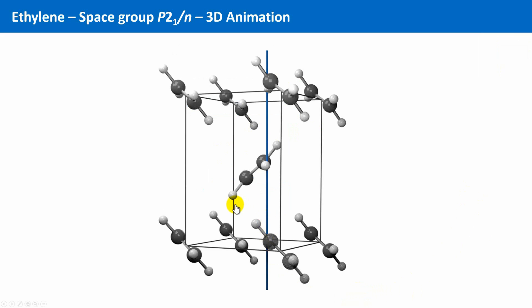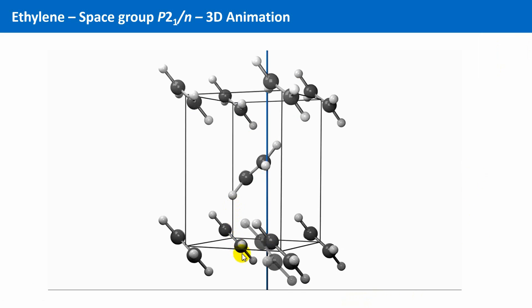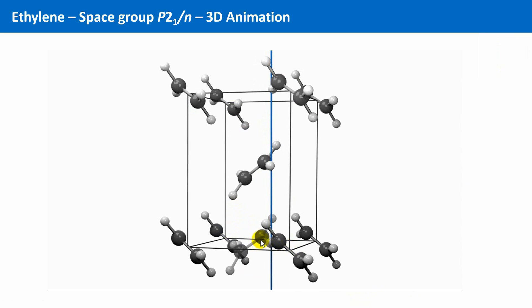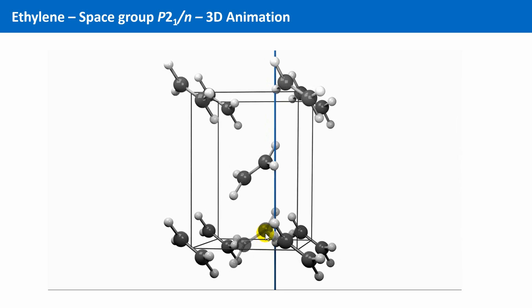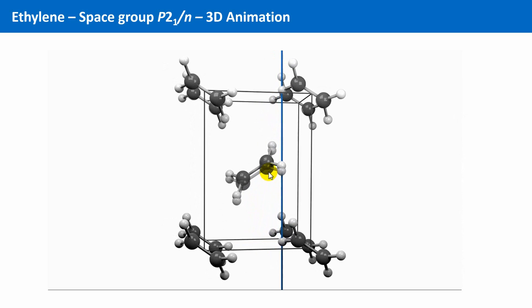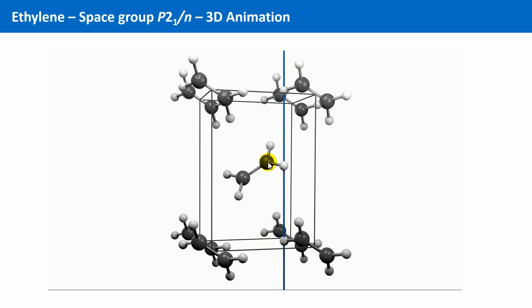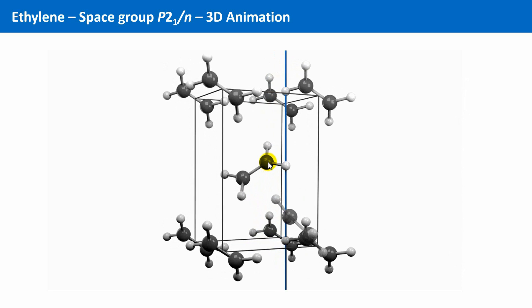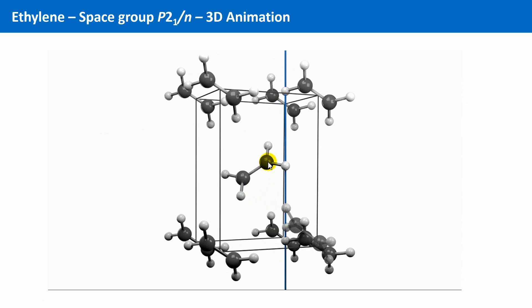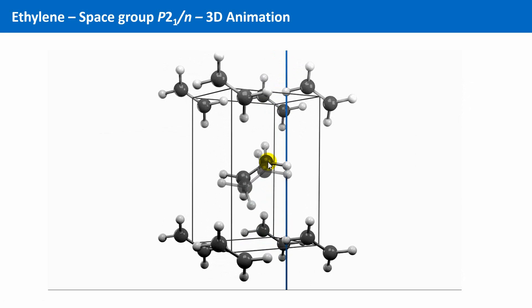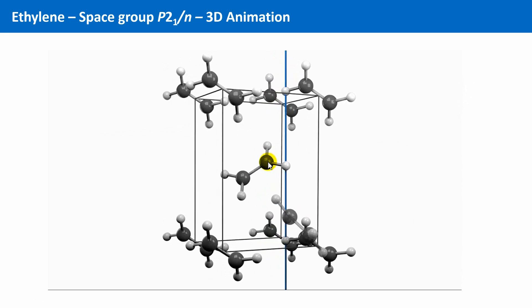First, the 2₁ screw axis is applied to this bottom right ethylene molecule. This means first a rotation around this axis by 180 degrees, and second translation along the b direction by one half. This can also be displayed as a combined movement, and now it looks indeed really as a screw rotation, our ethylene in the role of an artistic gymnast.